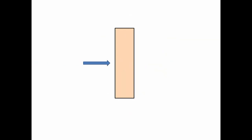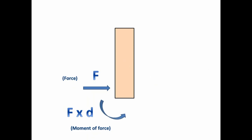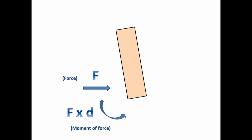When force is applied on the centre of mass or centre of resistance, the body moves in a straight line without rotating. However, when force is applied away from the centre of mass, moment of force tends to rotate the body. Here, force applied is F, distance of force application from the centre of resistance is D, hence moment of force is F multiplied by D. This moment tends to rotate the body.